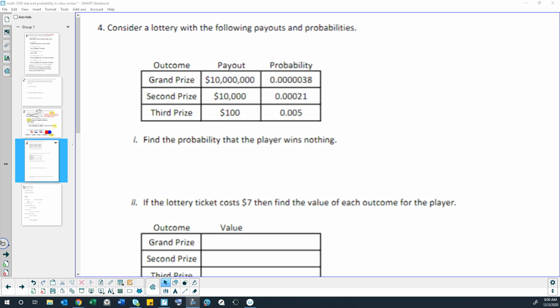The grand prize is $10 million with a probability of 0.00000038. The second prize is $10,000 with a probability of 0.00021, and the third prize is $100 with a probability of 0.005.